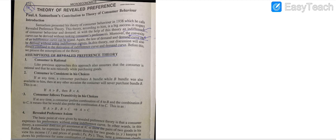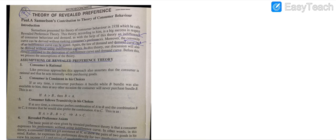What was the difference in Samuelson's theory? Samuelson's theory was actually a very big success in this regard — it introduced a concept in which we can obtain the indifference curve without ranking consumer preferences. The second achievement is the convexity of indifference curve, and the third one is the law of demand and demand curve derived without using the indifference curve. The elimination of the indifference curve is the most important point.